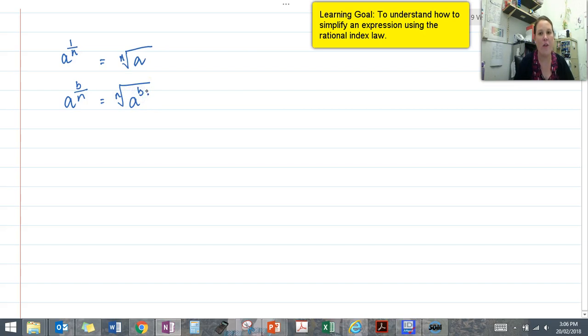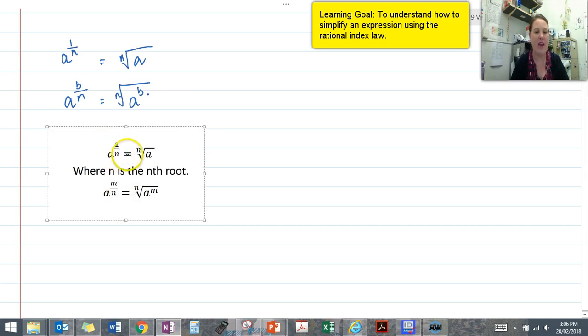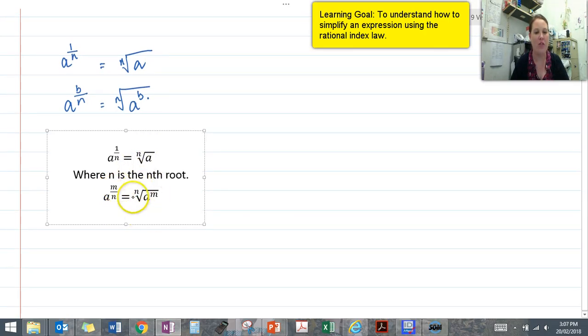So our rule for fractional or rational indices is: a to the power of 1 over n is equal to the nth root of a, or a to the power of m over n is equal to the nth root of a to the power of m.